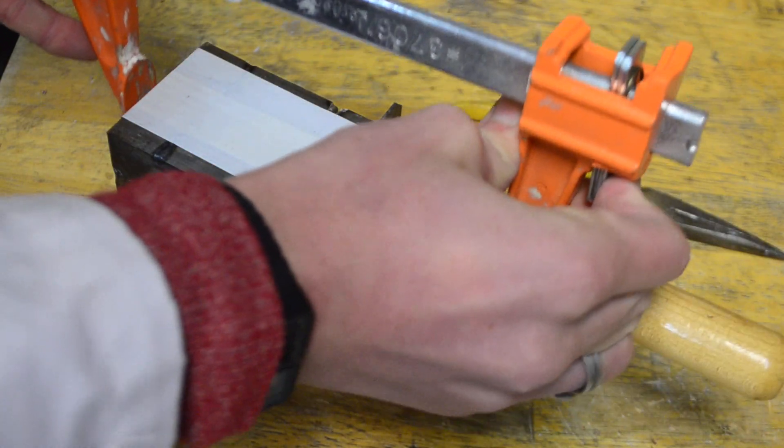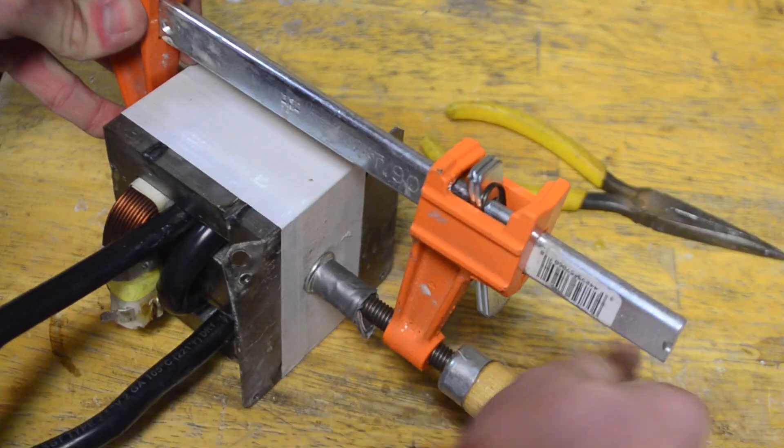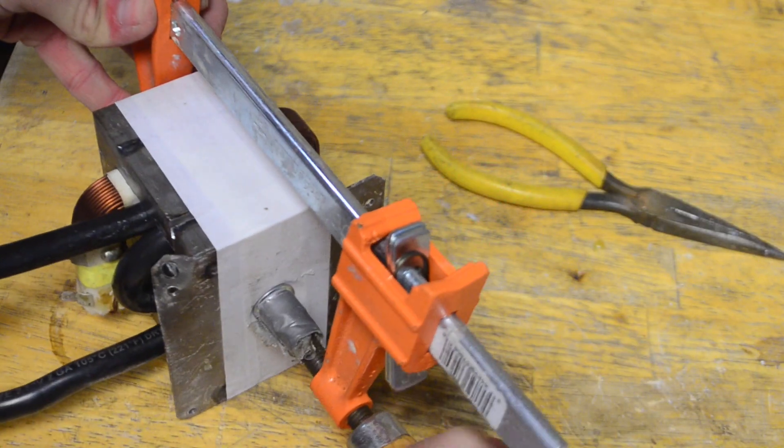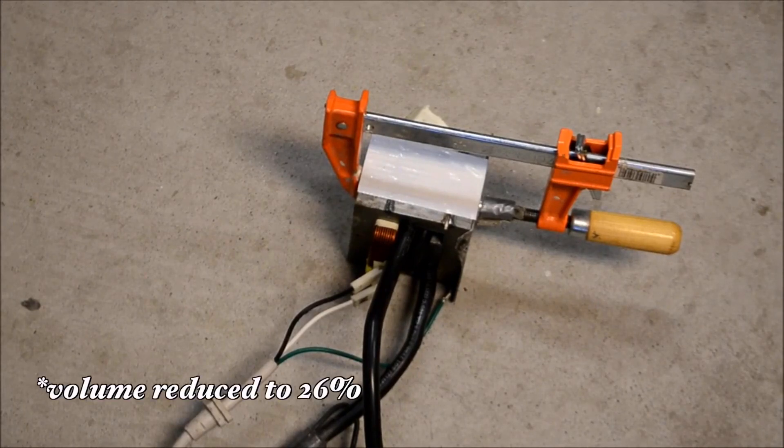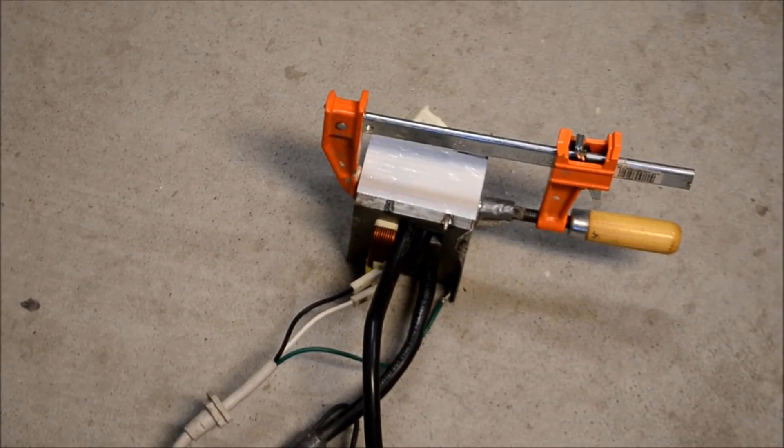So now to test my theory, I'm going to be applying this clamp to the transformer. This should hold it together very tight and we'll see if the noise is reduced. Okay, so now with the clamp holding it together more tightly, let's turn it back on and see if it still makes a loud noise. So the transformer is still making quite a loud hum, however it's very reduced from what it was before.